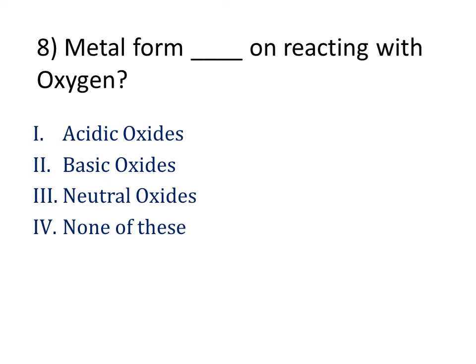Eighth question: metal forms dash on reacting with oxygen. Our answer is basic oxides. Metals react with oxygen to form basic oxides. Metallic oxides are basic in nature because they react with dilute acids to form salt and water.